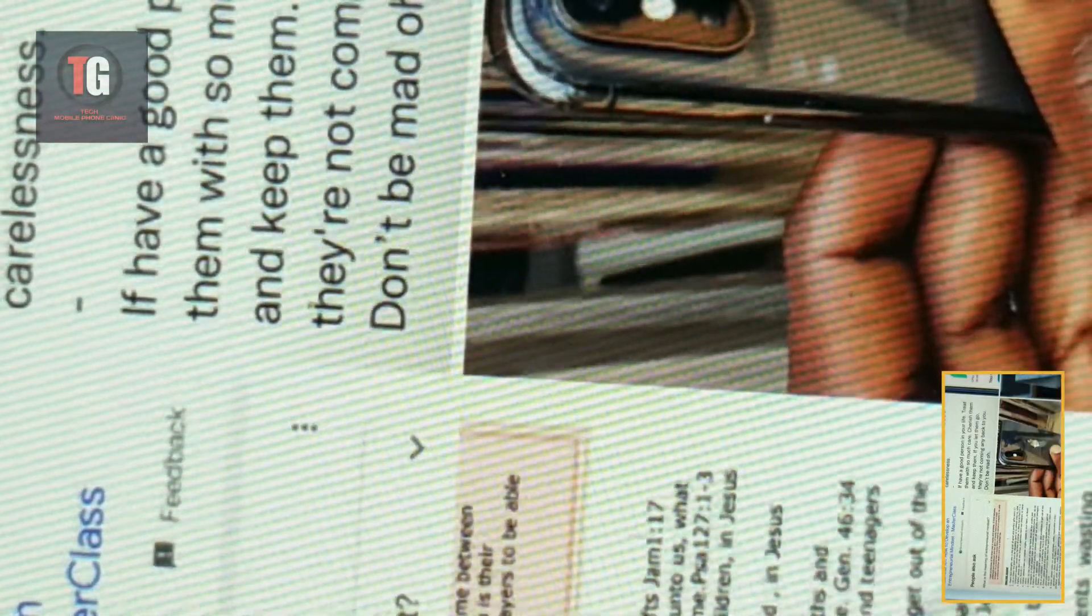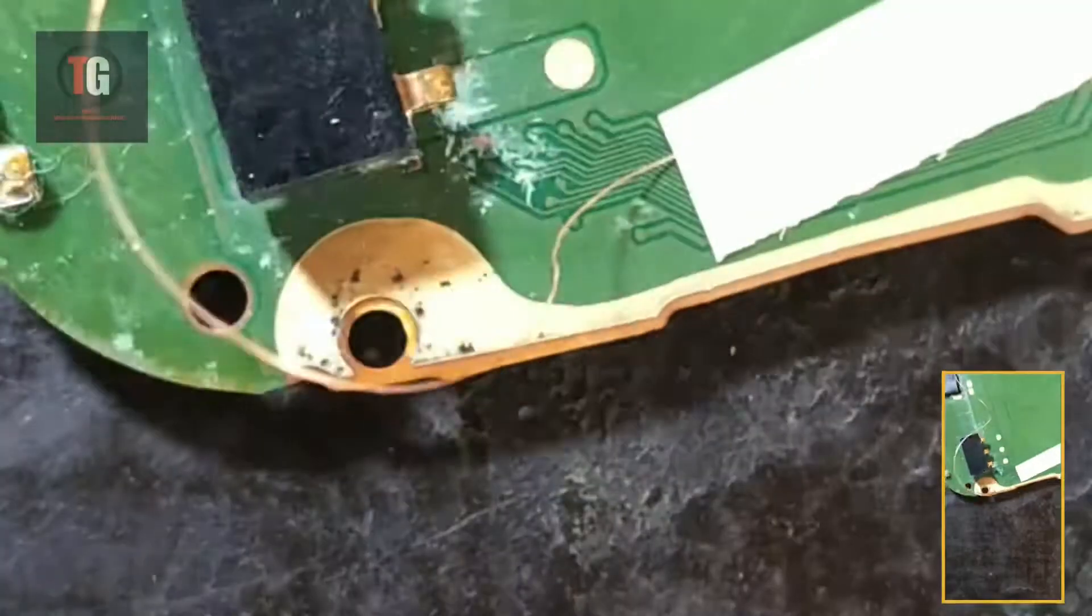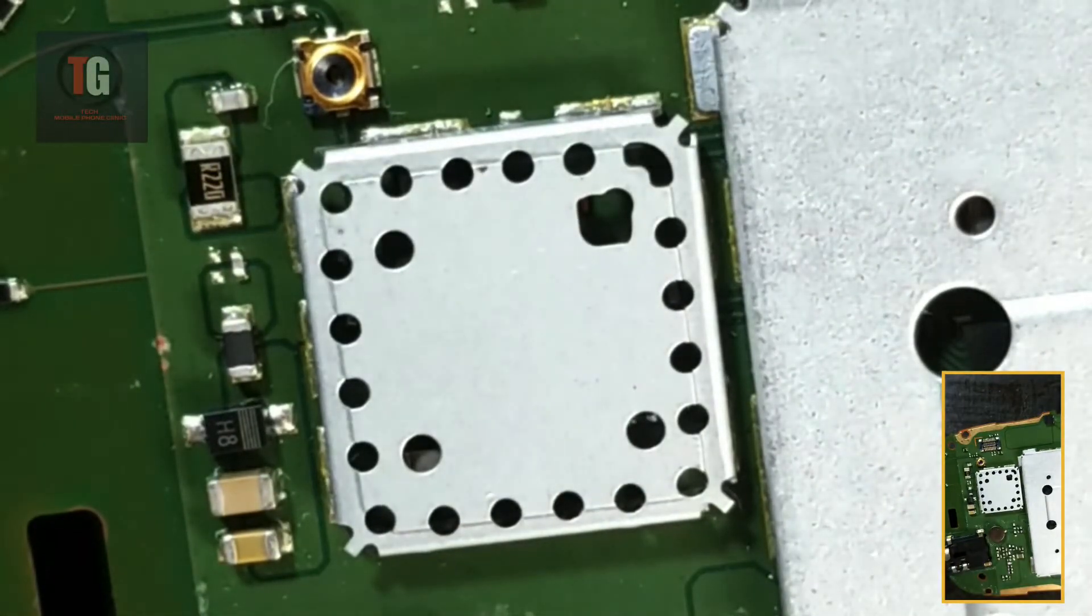So guys, when running a jumper, make sure after soldering the jumper wire, make sure you tape necessary parts just to avoid bridging.